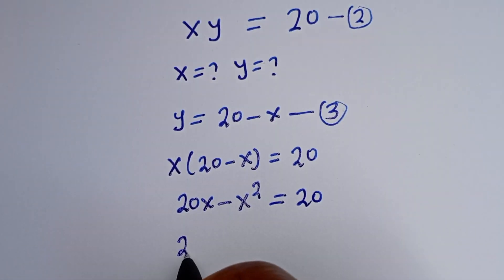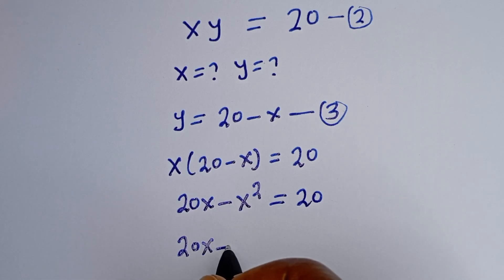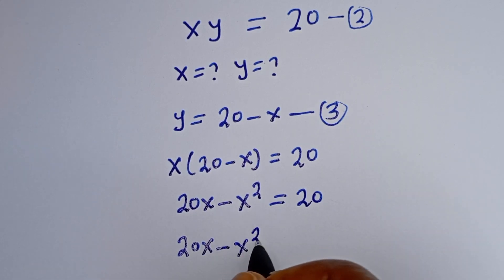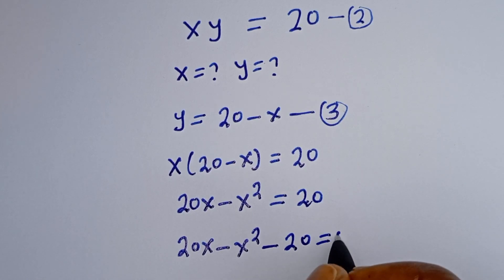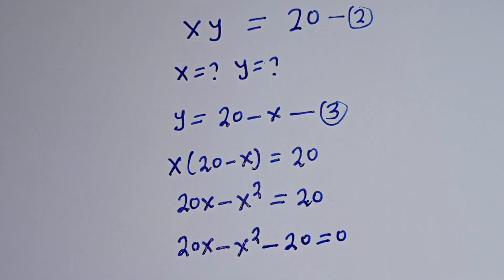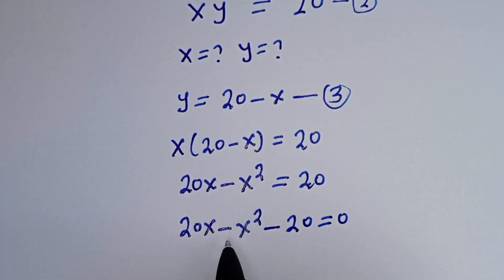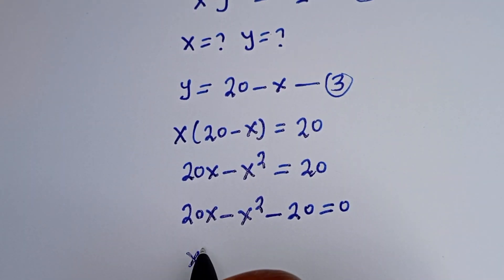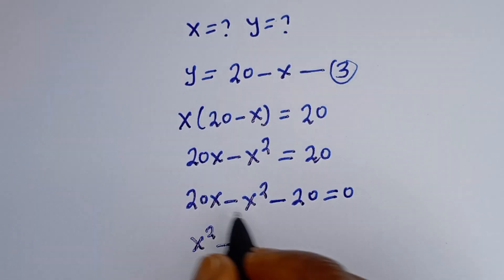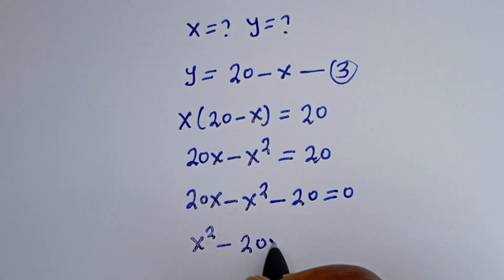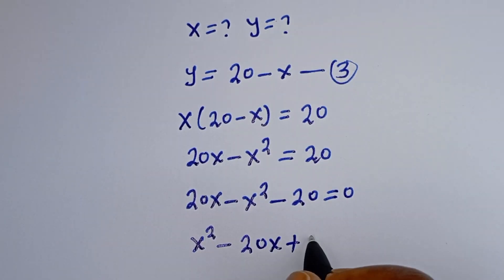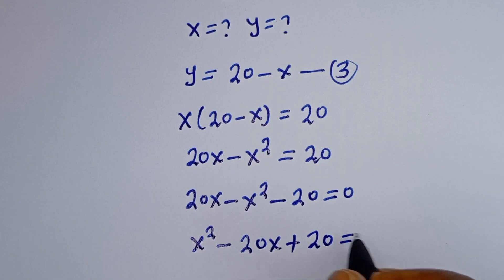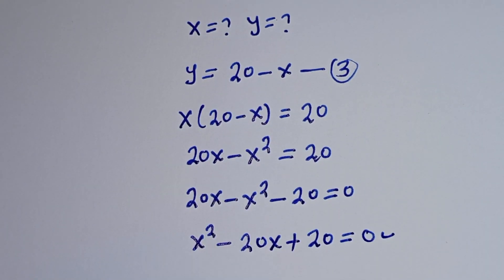Then we have 20S minus S squared. If we take 20 to this side, minus 20 equals 0. We rearrange by multiplying through by minus 1: S squared minus 20S plus 20 is equal to 0. So this is the quadratic equation which can be solved using the quadratic general formula.